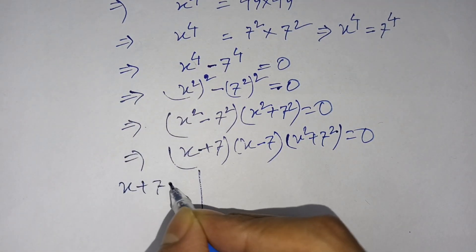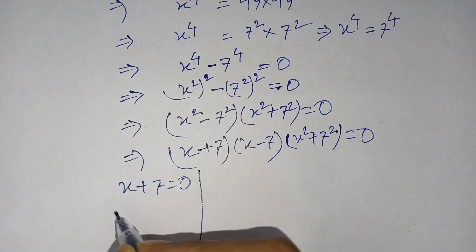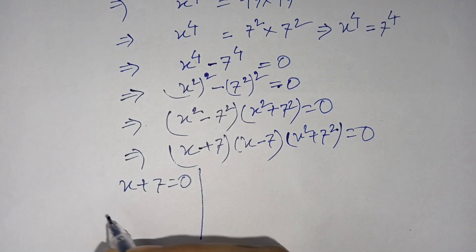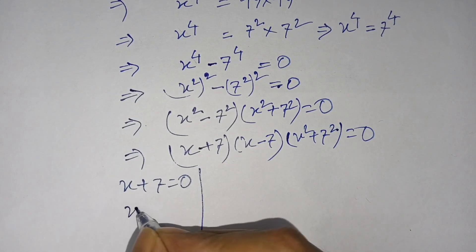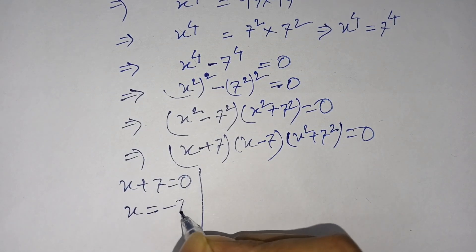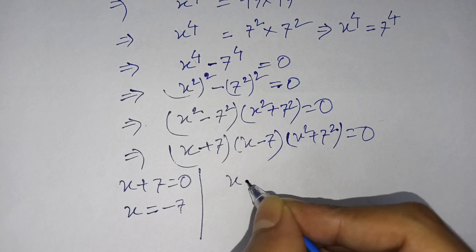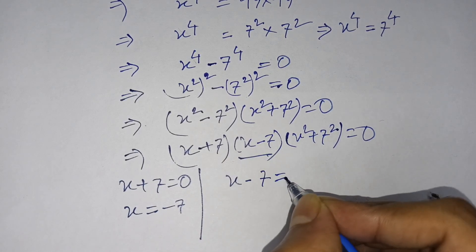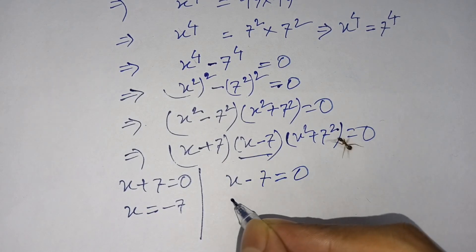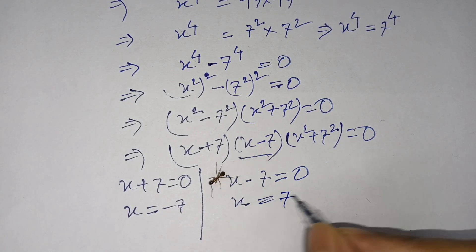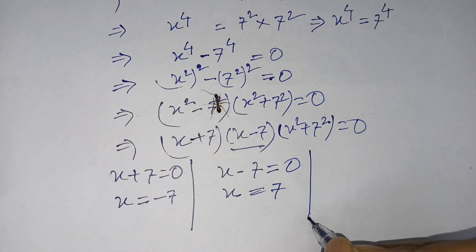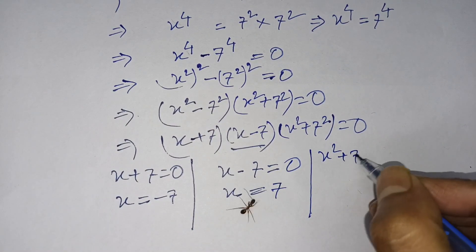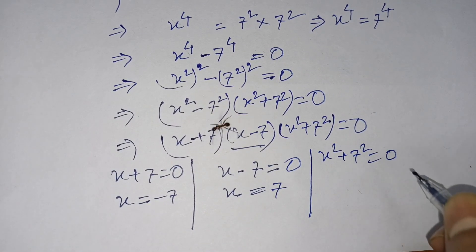Here, x plus 7 is equal to 0, which is our first factor, so x is equal to negative 7. And x minus 7 is our second factor, so x is equal to 7. This is our second answer. And x squared plus 7 squared is equal to 0.